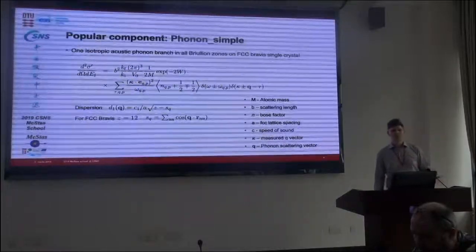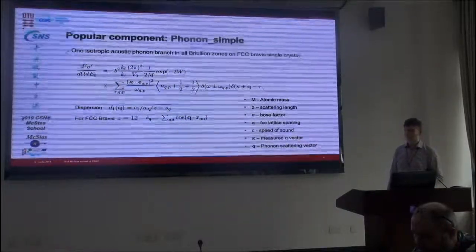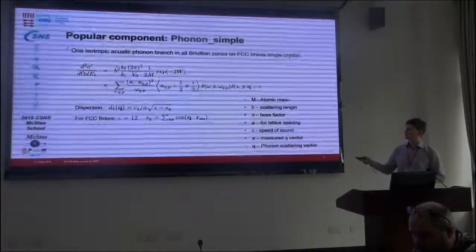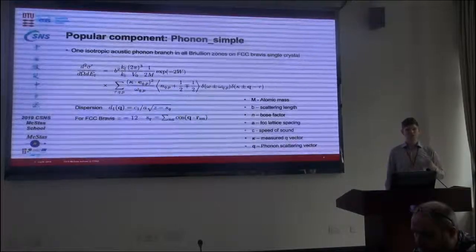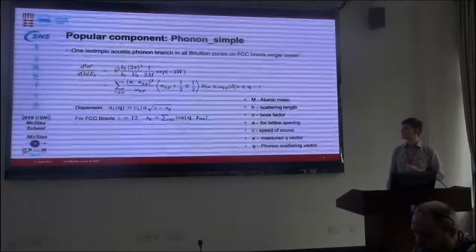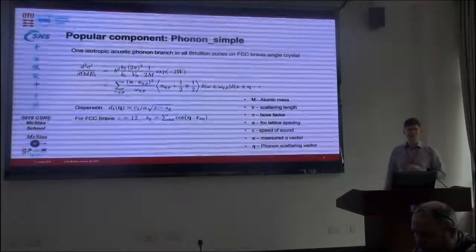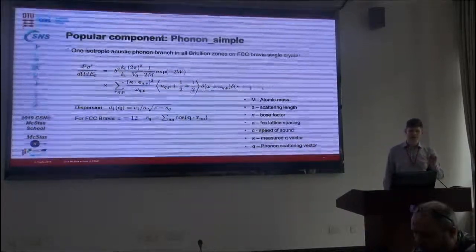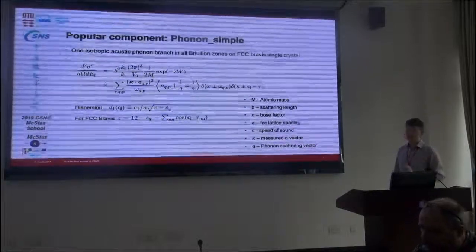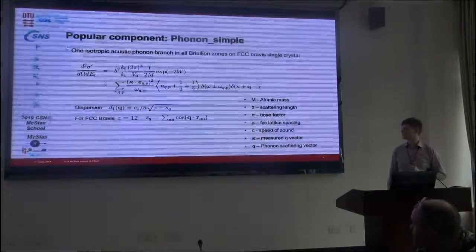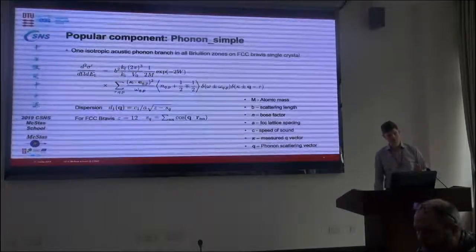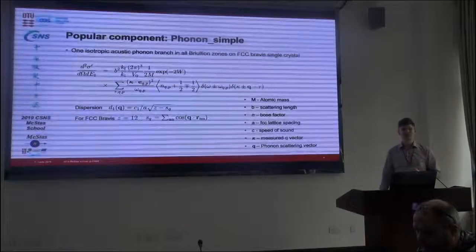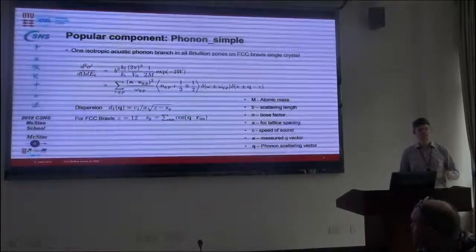One of the components that does this analytically in McStas is called phonon-simple. And it just simulates a single isotropic acoustic phonon branch. It does so in all Brillouin zones of an FCC crystal and a Bravais lattice. The Bravais lattice means that it's just a single atom in each unit cell. So, a lot of simplified requirements. But if all of that is fulfilled, it will make this branch analytically and very fast.